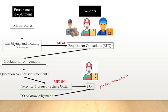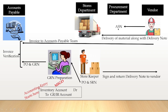The vendor acknowledges the purchase order and returns the acknowledged copy to procurement. Before delivery, the vendor submits an ASN (advanced shipment note) to the procurement department. The vendor then delivers materials along with a delivery note to the stores department. The storekeeper unloads the truck, physically counts the material based on the purchase order and delivery note, and prepares an SRN (stores receipt note) based on physical verification. The storekeeper certifies the delivery note by signing it and returns it to the vendor. The storekeeper then submits the SRN along with the PO to the warehouse team, who prepare the GRN based on the storekeeper's SRN and a copy of the vendor's delivery note.